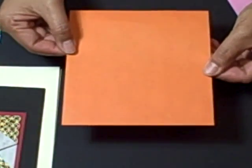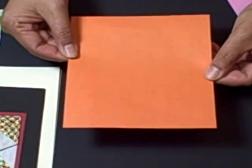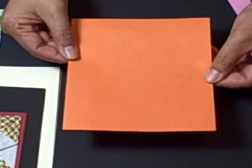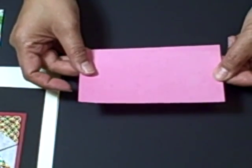You just take your 6 inch square origami paper, which is the standard size, and cut it in half. You'll have basically a 3 by 6 inch sheet.